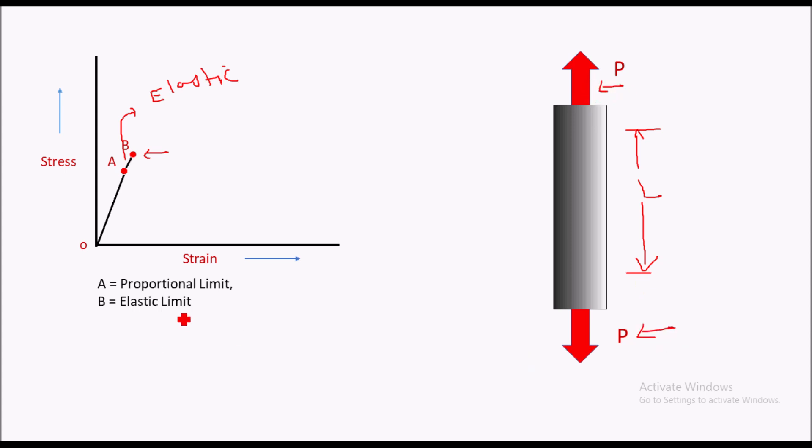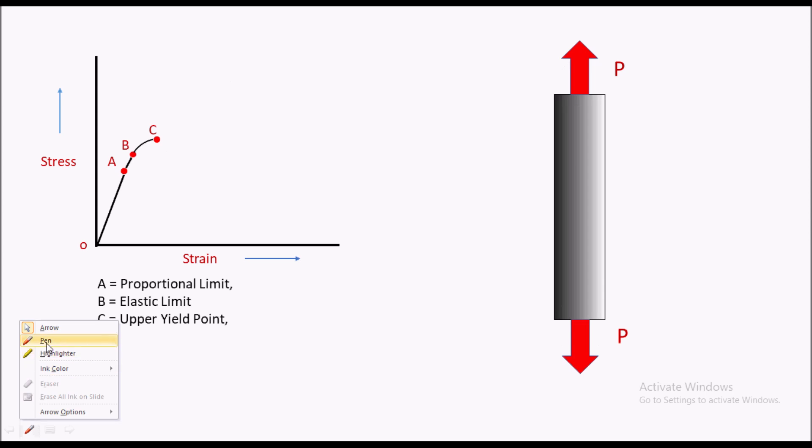So that is why it is called the elastic limit, because in this region it will elastically deform. Now the next point is point C, that is called the upper yield point. Here you can see in region BC there is more increase in strain as compared to stress.